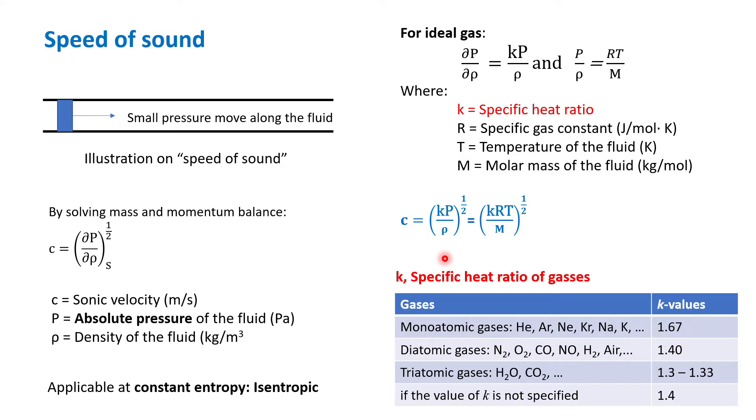What is k? K is, as we defined before, the specific heat ratio Cp divided by Cv. In this table it lists the value of k for different materials. For monoatomic gases like helium, argon, neon, you have a k value of 1.67. For diatomic gases like nitrogen gas, oxygen gas, CO, it has 1.4, and so on.